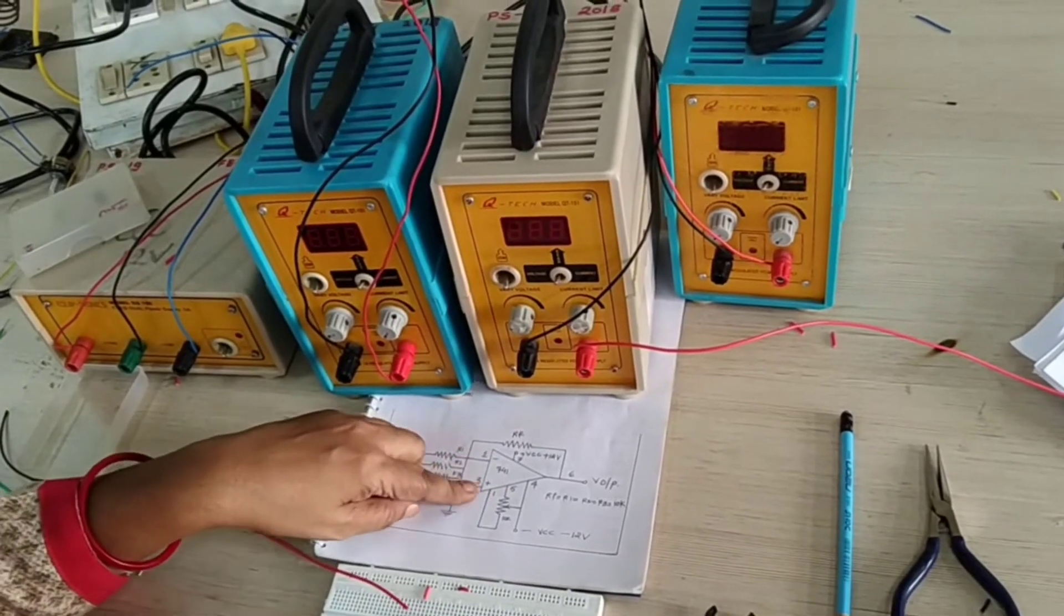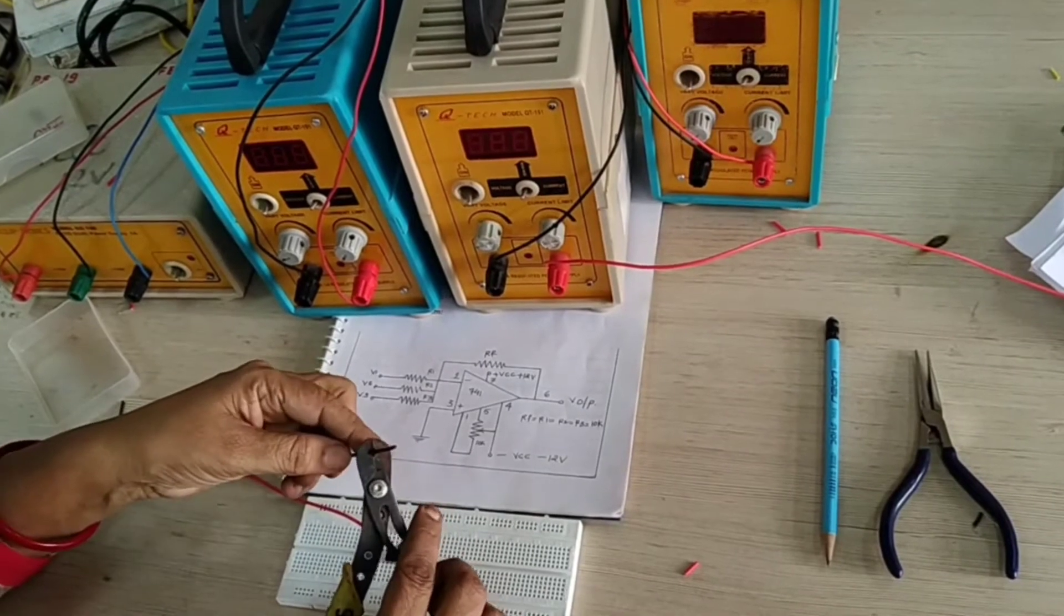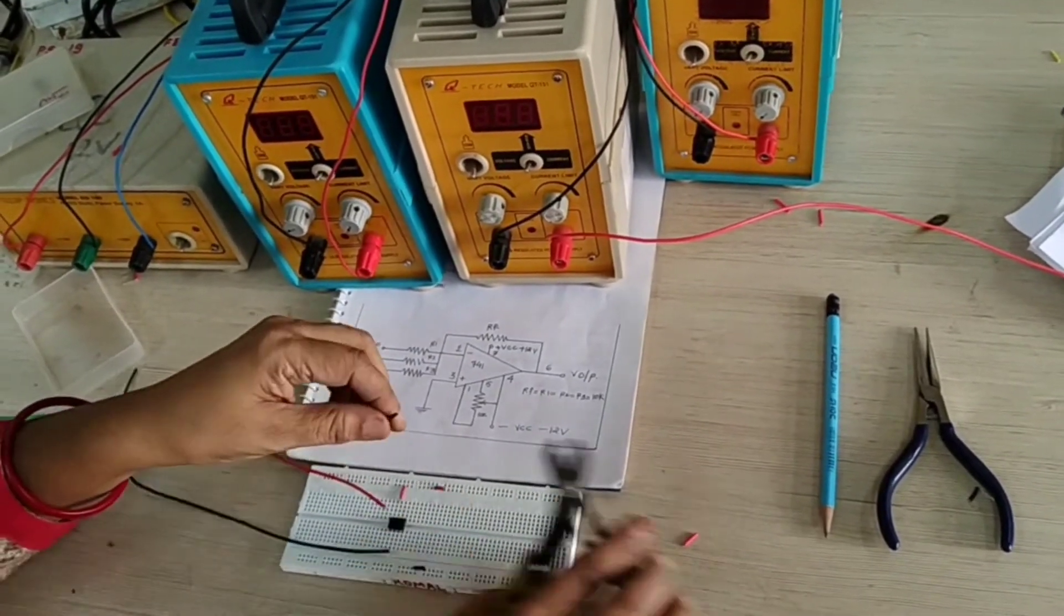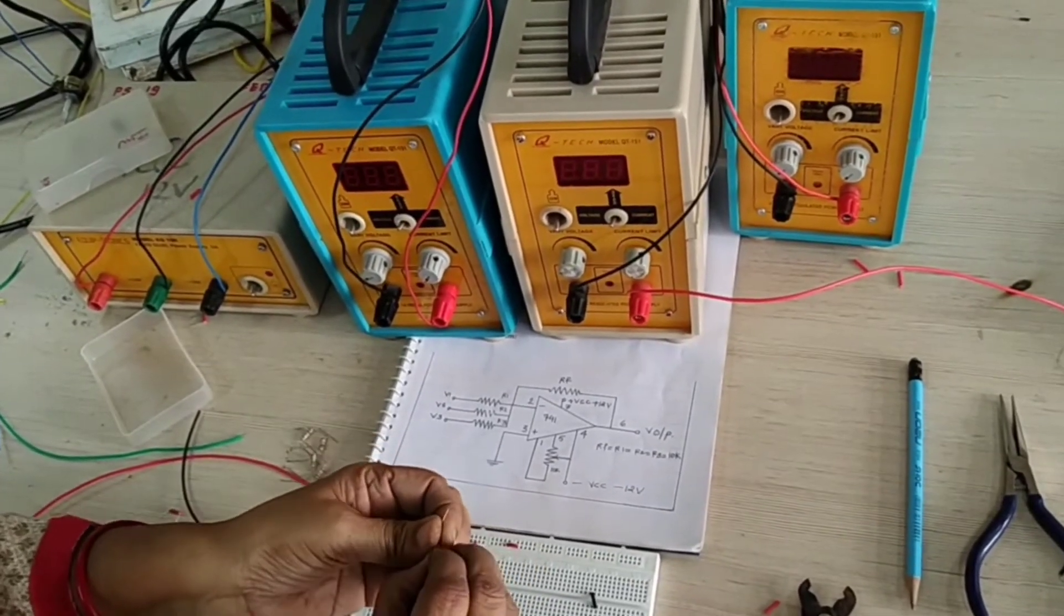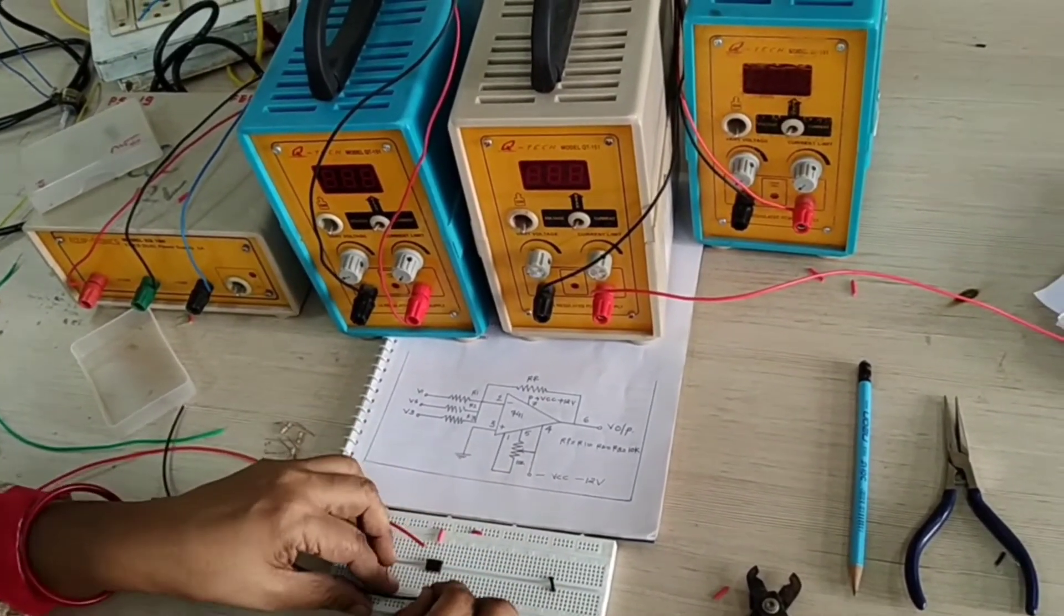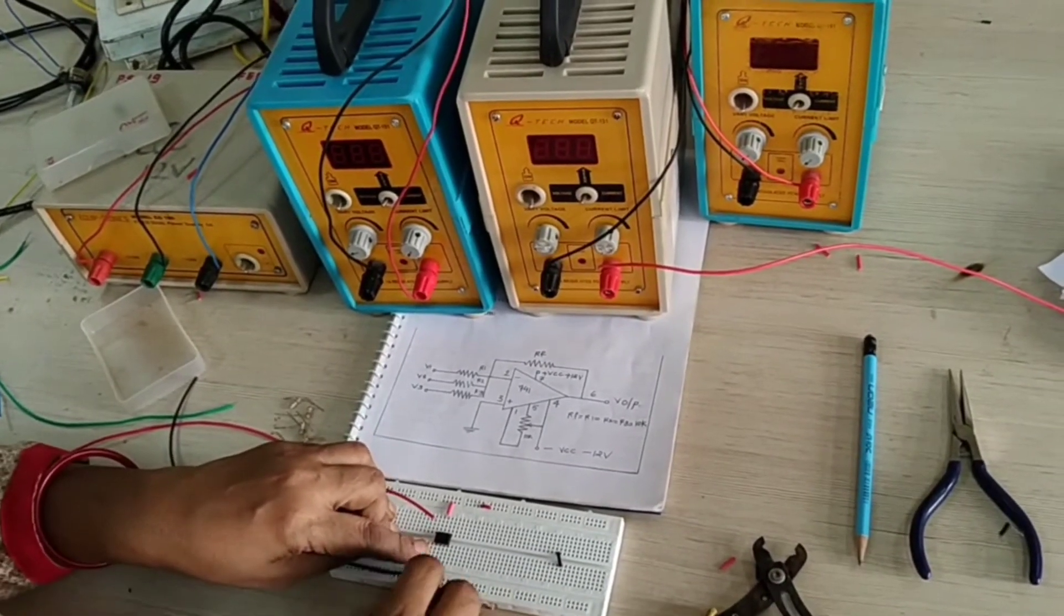Now here see the circuit diagram, pin number 3 is ground. So we indicated black color of the wire. Pin number 3 is ground. 1, 2 and this is your 3.